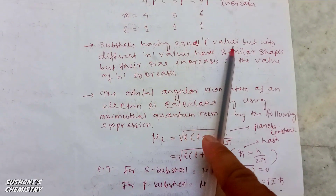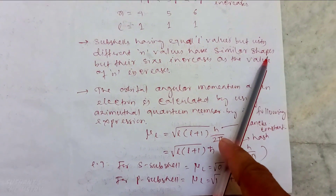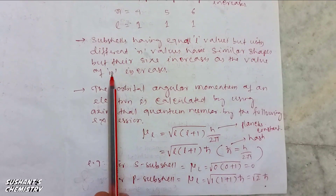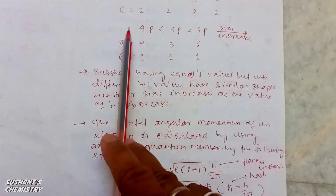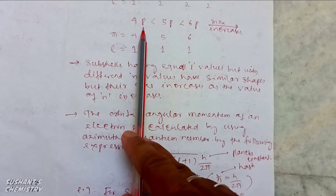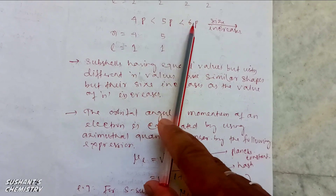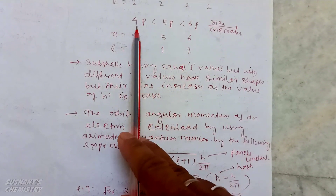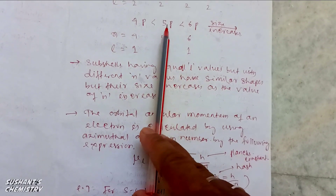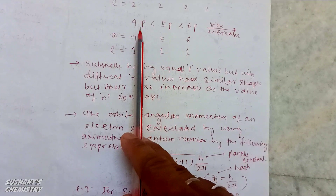Sub-cells having equal l values but with different n values have similar shapes, but their size increases as the value of n increases. For example, 4p, 5p, and 6p sub-cells all have the shape of a p sub-cell, that is a dumbbell shape. The size of 6p sub-cell is more than 5p sub-cell, which is more than 4p sub-cell.